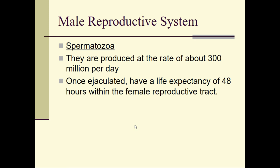Once sperm cells are ejaculated and are in the woman's body, they have a life expectancy of about 48 hours within the female reproductive tract. That means a woman technically can get pregnant two days after intercourse — also an interesting fact.